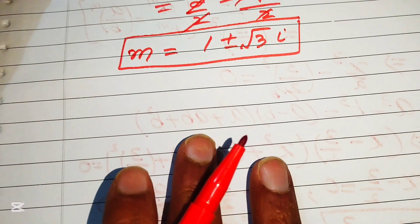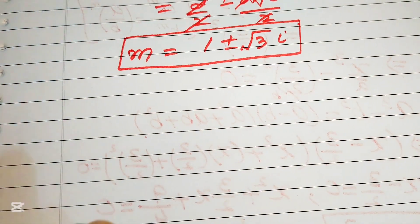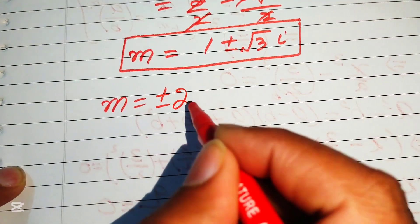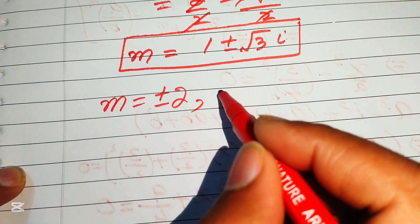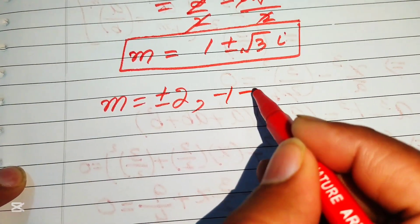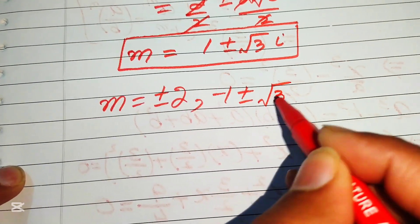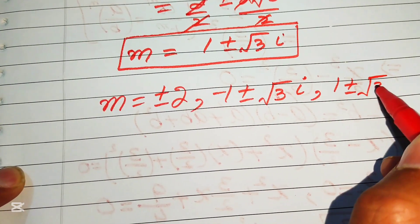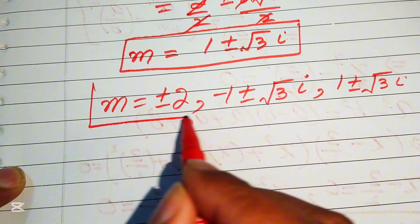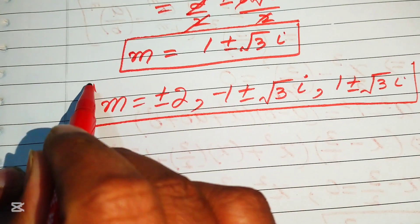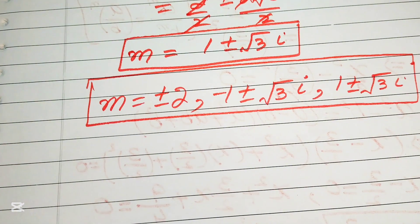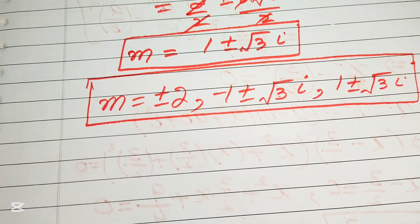Finally, the six roots of the given equation m⁶ minus 64 equals 0 are: m equals plus or minus 2, m equals minus 1 plus or minus square root of 3 times iota, and m equals 1 plus or minus square root of 3 times iota. Thank you for watching, please subscribe for more videos.